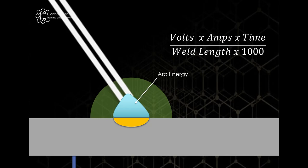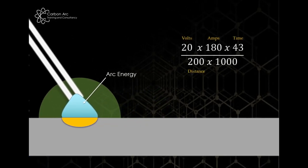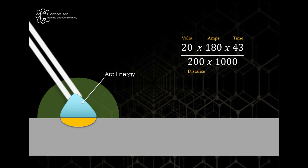So from that base equation, we can take and add in our values. So I'm going to say I'm using 20 volts, 180 amps and we welded our arc time was 43 seconds. I then measure the distance of my weld being 200 mil and I can put them in and what I get is a top and a bottom line. Normally these are quite big numbers so you can see we're in the hundreds of thousands. We divide them by each other and what we get is an arc energy of 0.774 kilojoules.